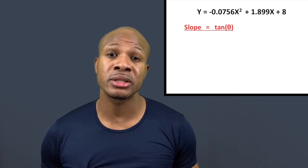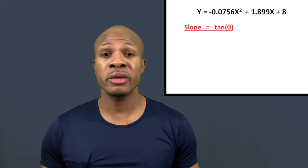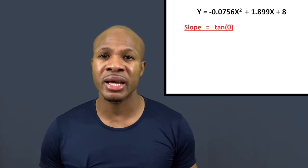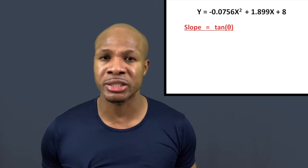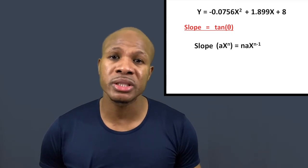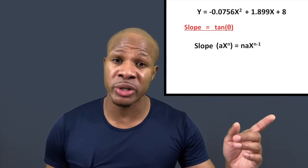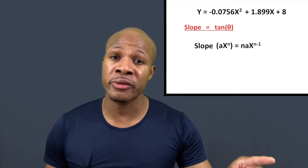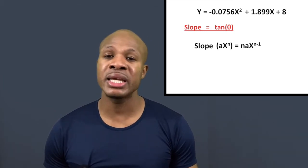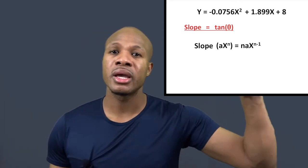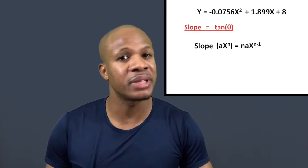The slope of a function is called its derivative. For polynomials like quadratic equations, it's easy to calculate. The trick is: take the power that x is raised to, bring it down, multiply it by the coefficient, and decrease the power of x by one. That rule is: d/dx of ax^n = n·a·x^(n−1). Just bring the power down, multiply by the coefficient, and decrease the power by one.